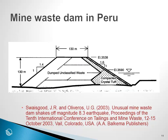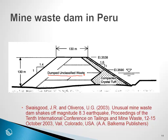Here is a case history — a mine waste dam in Peru — where it would have been perfectly appropriate to do a Newmark type of analysis. The characteristics of this facility are that it was a dumped, unclassified material, and the structure was designed for temporary diversion of water, so most of the time it was dry. There was not much water being retained, and so they had a concrete apron to reduce seepage through the structure during the time when there was some water in the reservoir.